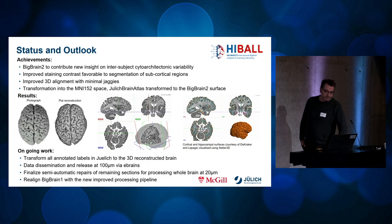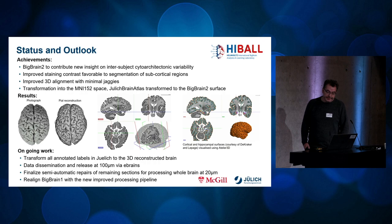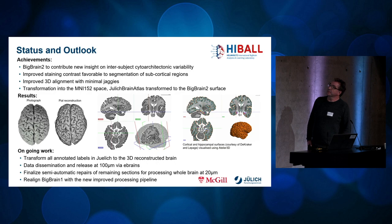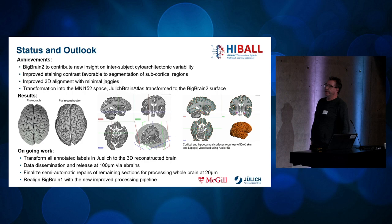To conclude, we have achieved an overall quality of the 3D reconstruction of BigBrain 2 that provides new insights into inter-subject variability. It shows improved staining contrast of subcortical regions and improved 3D alignment with minimal jaggies. By transforming the dataset to the MNI 152 reference system, BigBrain 2 data can be directly integrated into tools that use MNI 152. The Jülich Brain Atlas could similarly be transformed into the BigBrain 2 space. Work currently in progress includes the transformation of all labeled structures annotated in Jülich, and we want to release the 100-micron dataset via EBRAINS and further increase the resolution toward 20 microns.